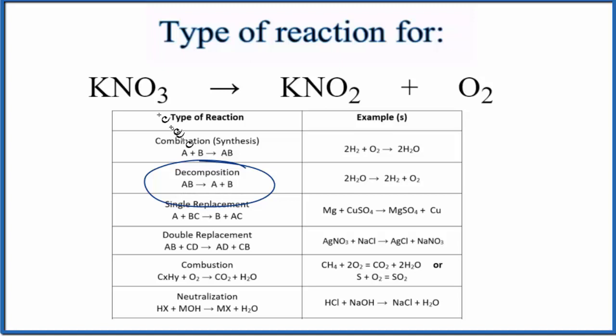apart to yield A plus B. So that's the general pattern. This would be AB and this would be A plus B. So KNO3, the type of reaction for KNO3 breaking down into KNO2 plus O2, is a decomposition